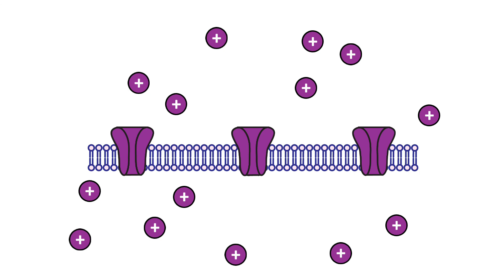In this animation, the membrane starts and ends with seven positive ions on each side even though the ions move through the open channels.